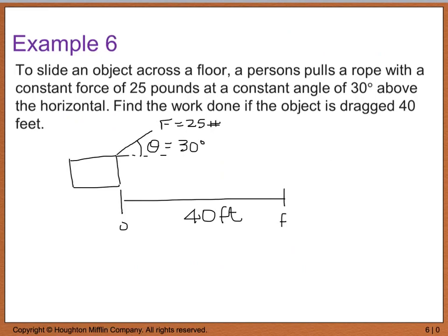So, again, I can't just use my force times displacement formula because my force is actually being pulled in between the horizontal and vertical direction. Now, ultimately, my object is being pulled in the horizontal direction. So, when we go to find our work, our work is going to equal our force, which was 25 pounds.